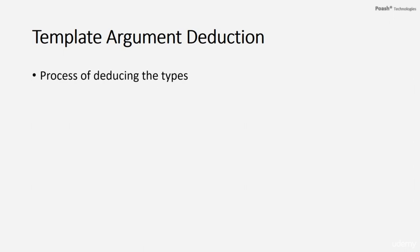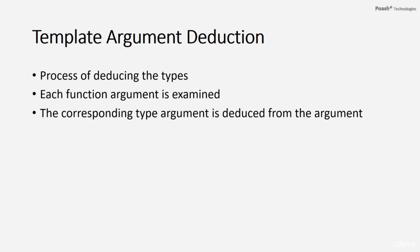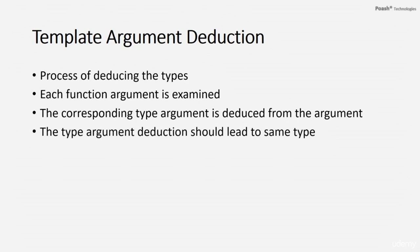Hi and welcome to the next part on templates. In this video, I'll explain template argument deduction — the process by which template type arguments are deduced. The compiler examines each function argument and from that argument the corresponding type argument is deduced. This means if the argument type is integer, then the corresponding type argument is deduced as integer. Once the type argument is deduced to a specific type, its subsequent deduction in other function arguments should lead to the same type. During template argument deduction, no conversions are performed.